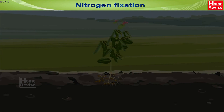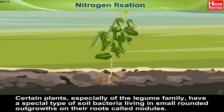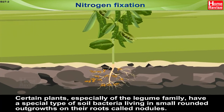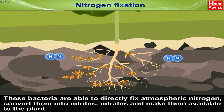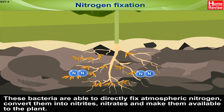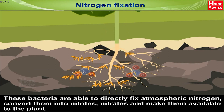Nitrogen Fixation. Certain plants, especially of the legume family, have a special type of soil bacteria living in small rounded outgrowths on their roots called nodules. These bacteria are able to directly fix atmospheric nitrogen, convert them into nitrites and nitrates, and make them available to the plant.